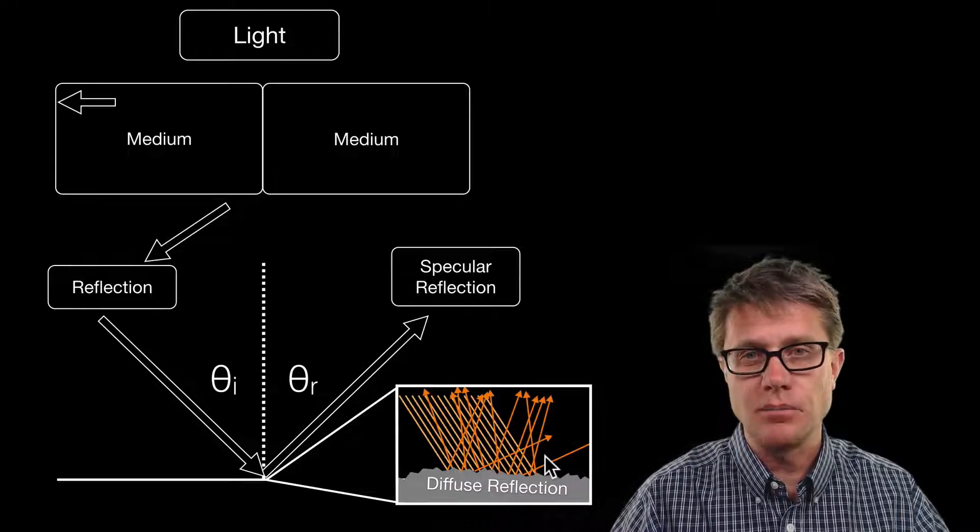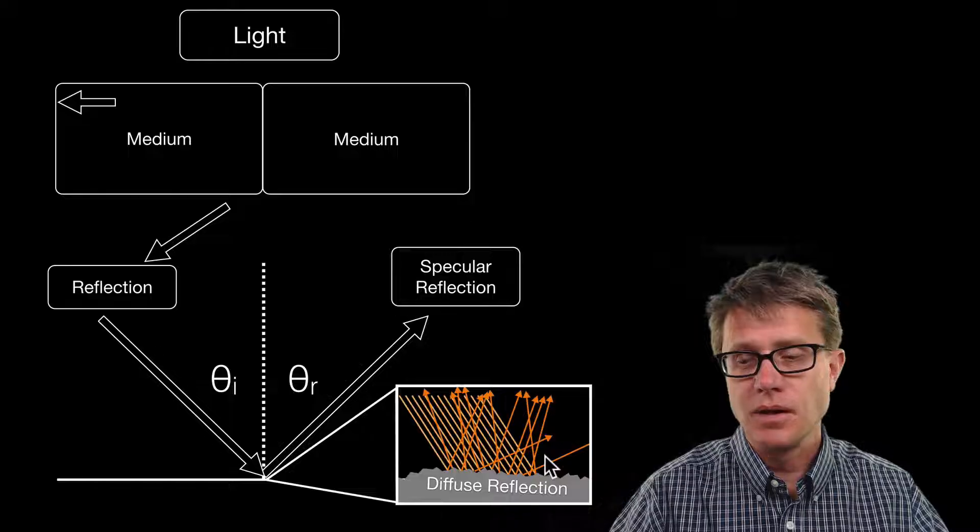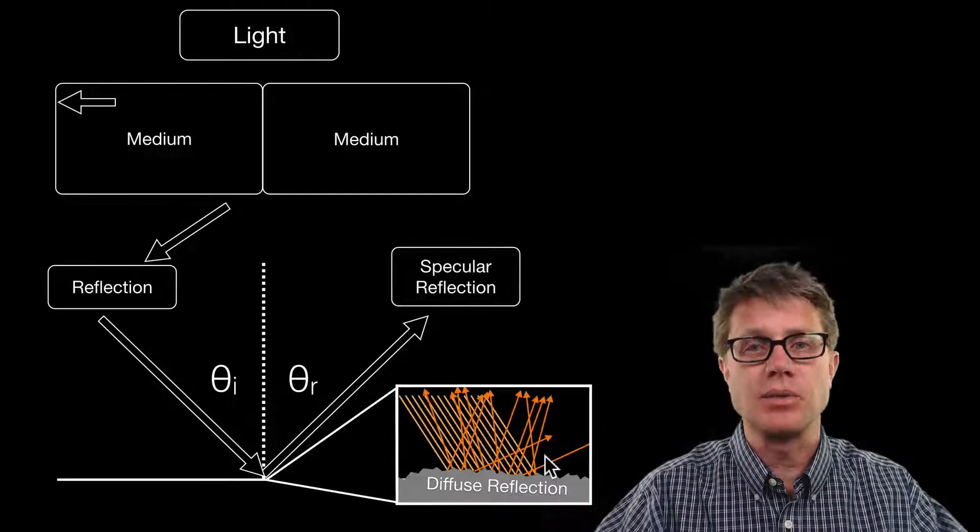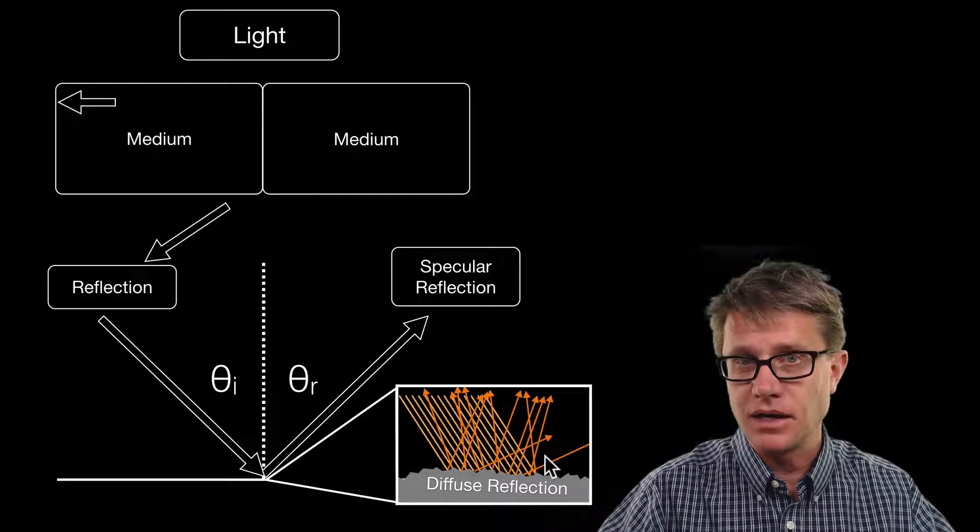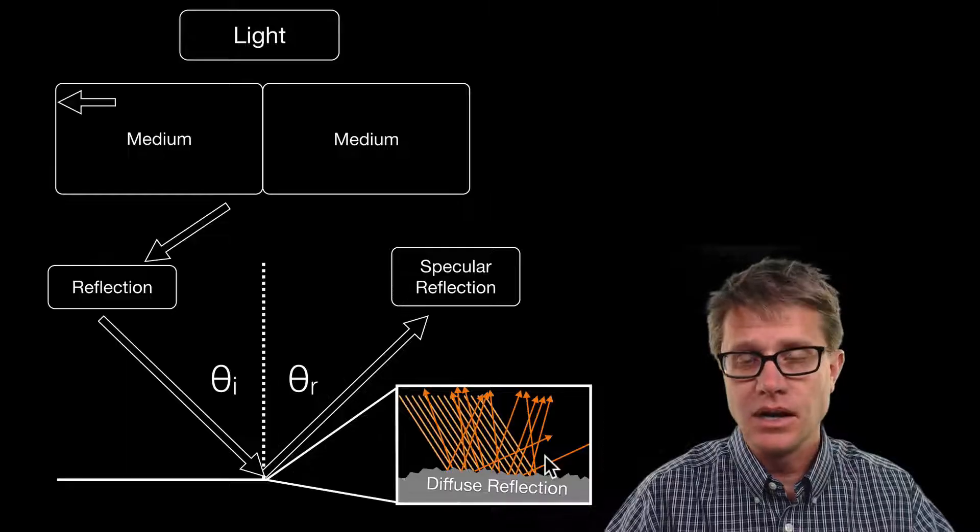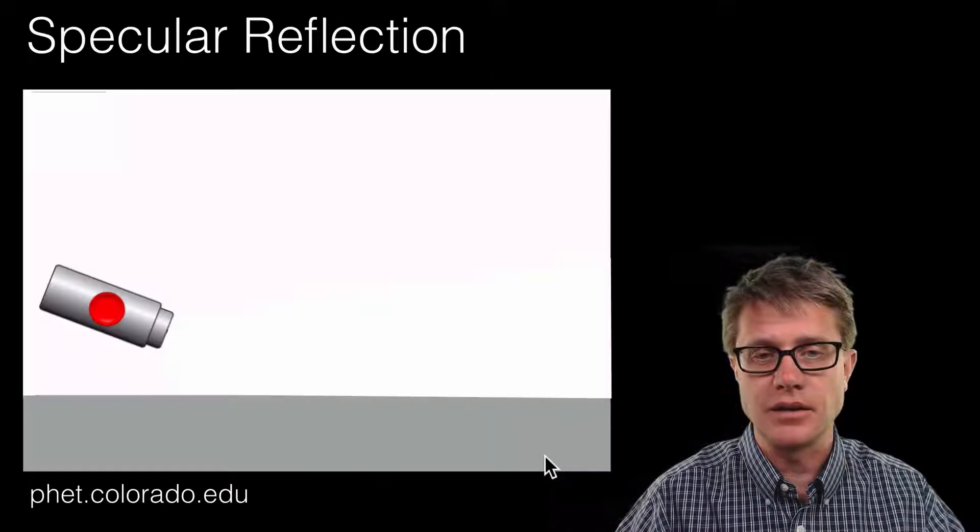And so if you look at how light bounces off a mirror, that is specular reflection. But if you had some other surface, maybe like a piece of paper, it does not bounce back exactly the same way it came in. And so you are going to get this diffuse light on the surface.